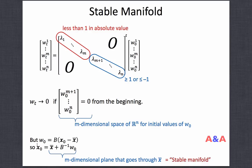So x_0 = x-bar + B-inverse times W_0. If x starts with an initial value where W_0 satisfies the convergence condition, then x will eventually converge to x-bar. This defines an m-dimensional plane for x that passes through the steady state x-bar. This subspace is called the stable manifold of x-bar: if the system starts at a point on that subspace, it converges to the steady state; otherwise it does not converge.